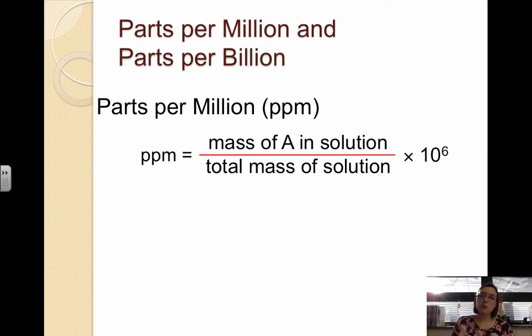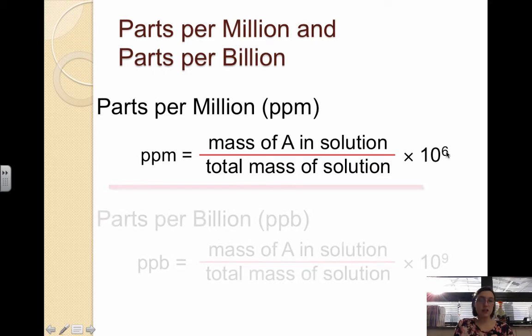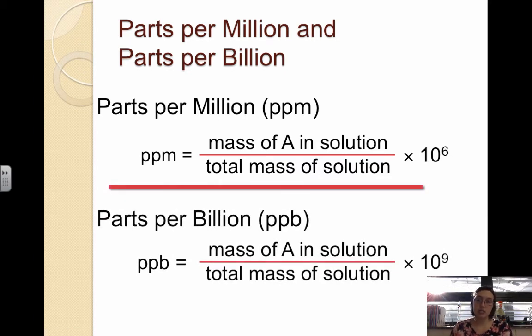Then we have parts per million and parts per billion. This is still relating the mass of one component to the mass of the solution, but this is typically used for very dilute solutions. Instead of being a percent, if it's parts per million or ppm, that means you're multiplying by a million instead of by 100. And then parts per billion, you're multiplying by 1 times 10 to the ninth, which is billion.